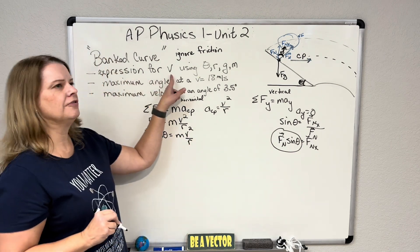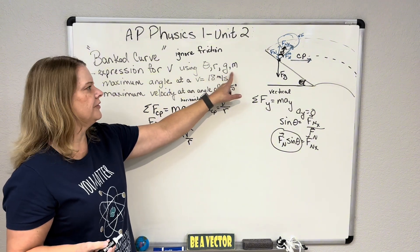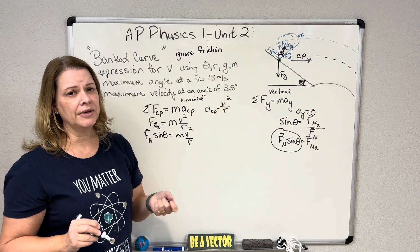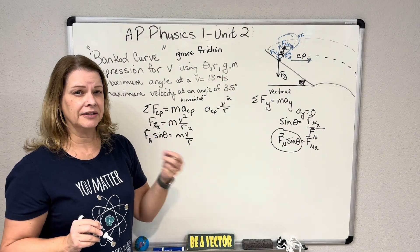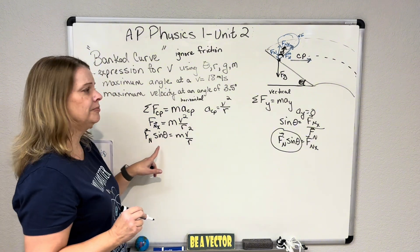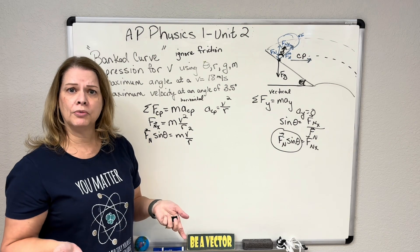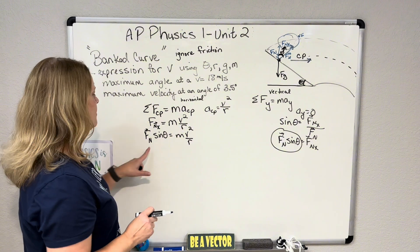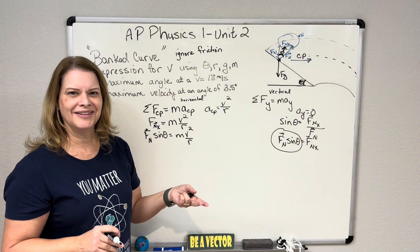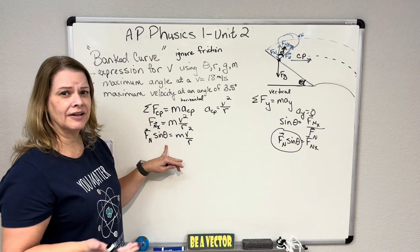They ask for an expression for velocity using theta, R, g, and mass. This is just like the conical pendulum problem — only instead of the centripetal force being tension in the string, the centripetal force is your normal force in the X direction. For the conical pendulum, the centripetal force is the tension in the X direction as well. So it's going to look exactly the same. I can't have normal force in my expression — I can only have theta, R, g, and M.